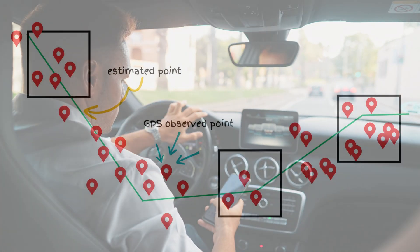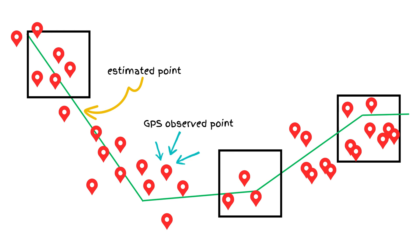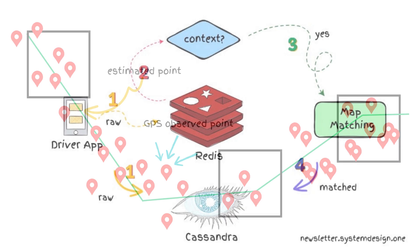Each driver app sends its location to the server every few seconds, but GPS signals can get noisy and sparse due to a poor network. The exact location isn't necessary to find nearby drivers, so they do map matching. Map matching transforms raw GPS signals into actual road segments. They use Apache Cassandra to store raw locations for long-term durability. Since Cassandra is optimized for write operations, they add a Redis cache layer on top of it to shed the read operations. Redis stores recent driver locations and buffers enough data points to do map matching. The map-matched data then gets stored in a separate schema on Cassandra.